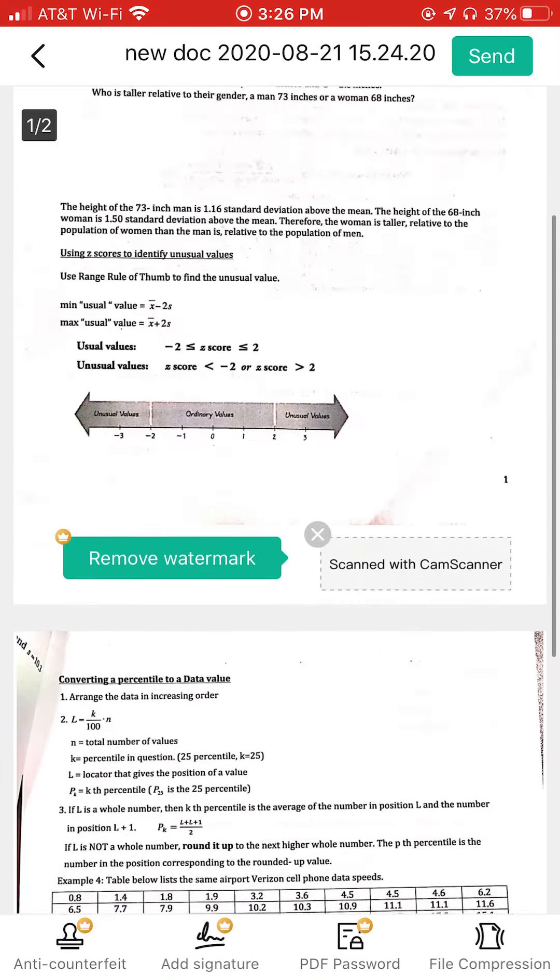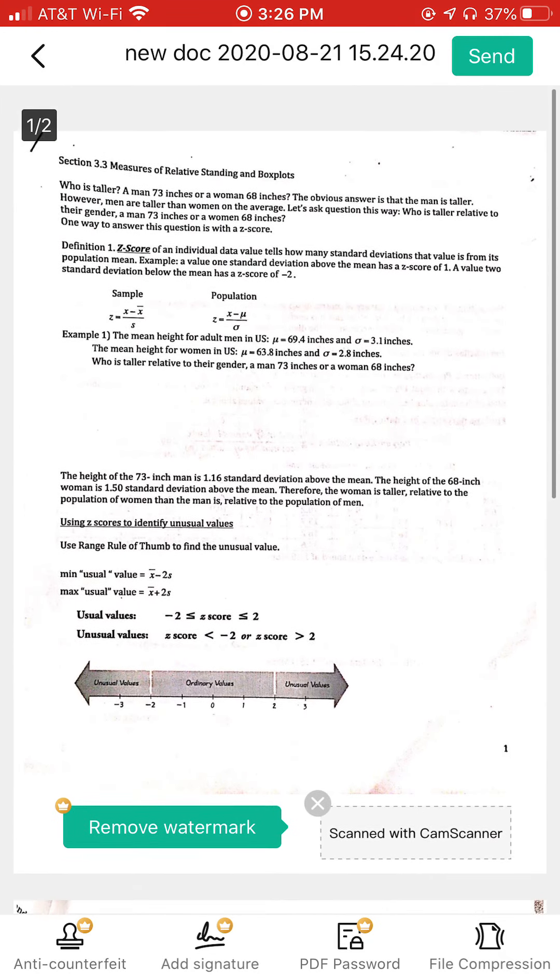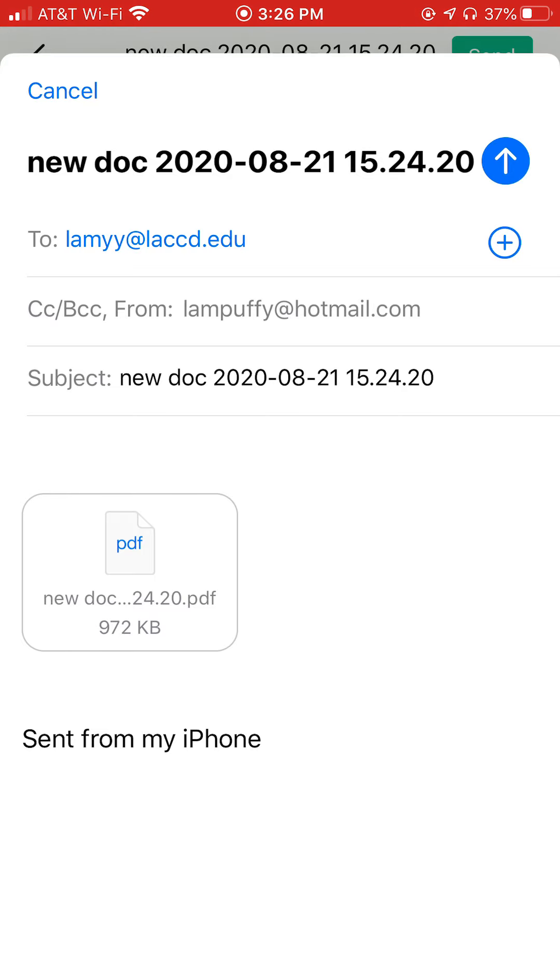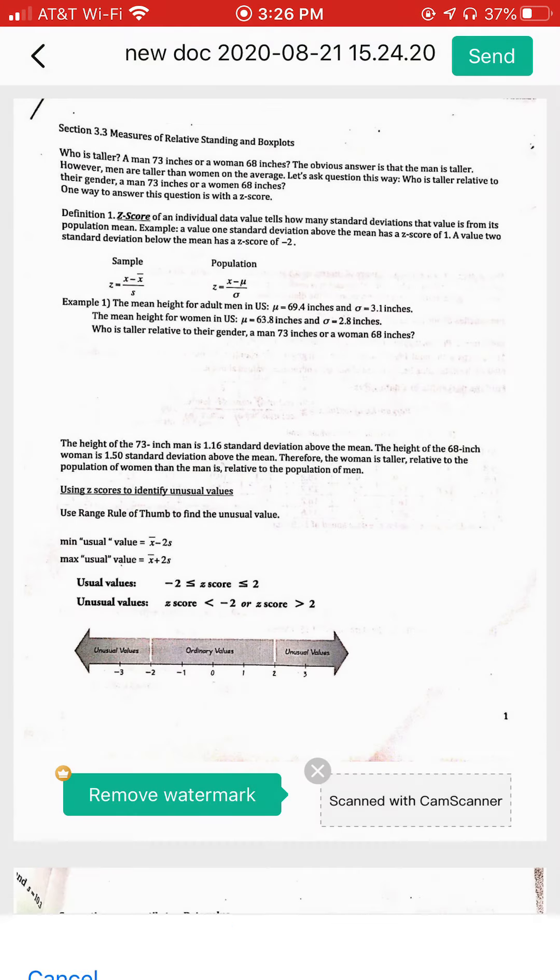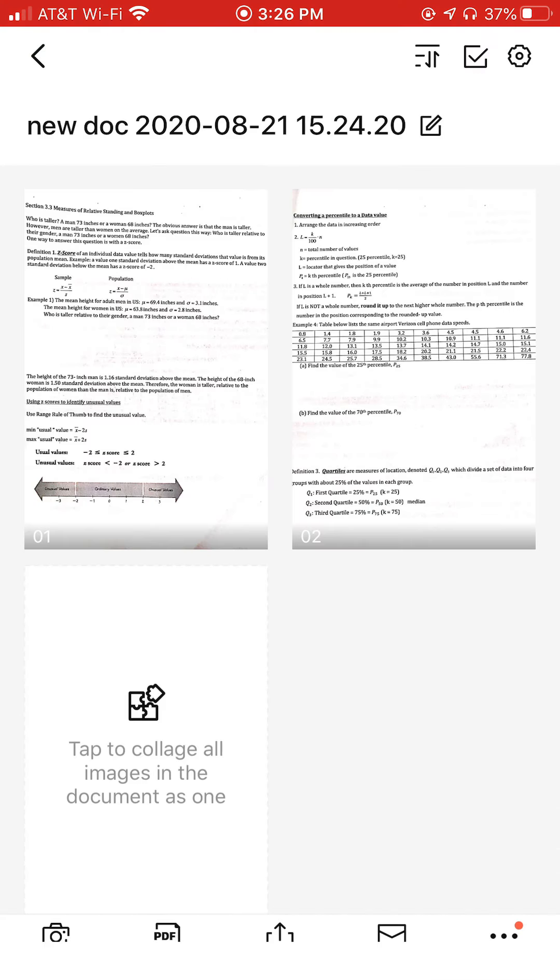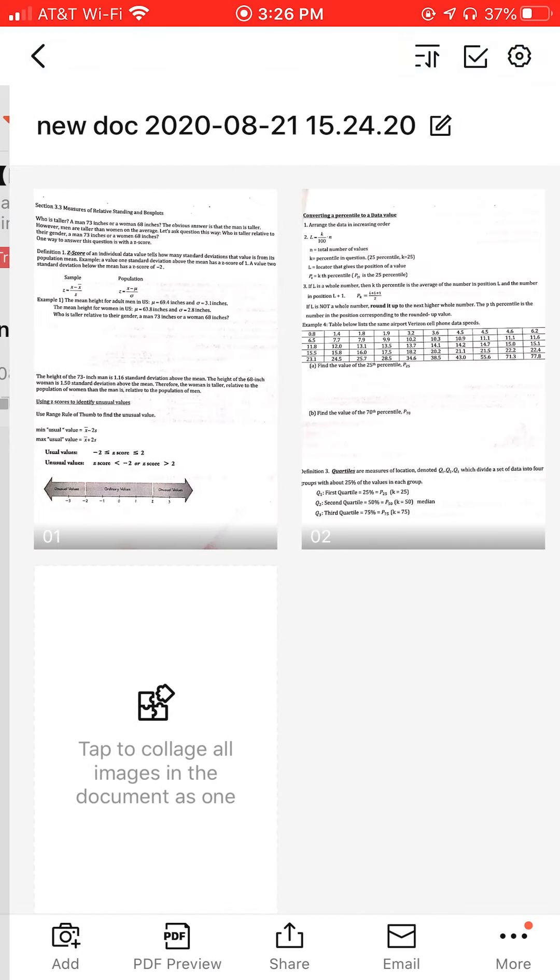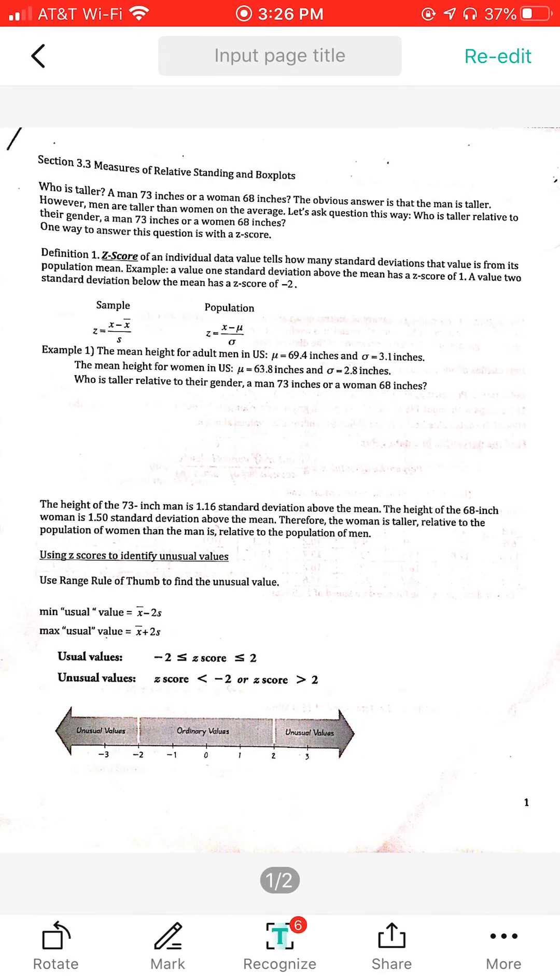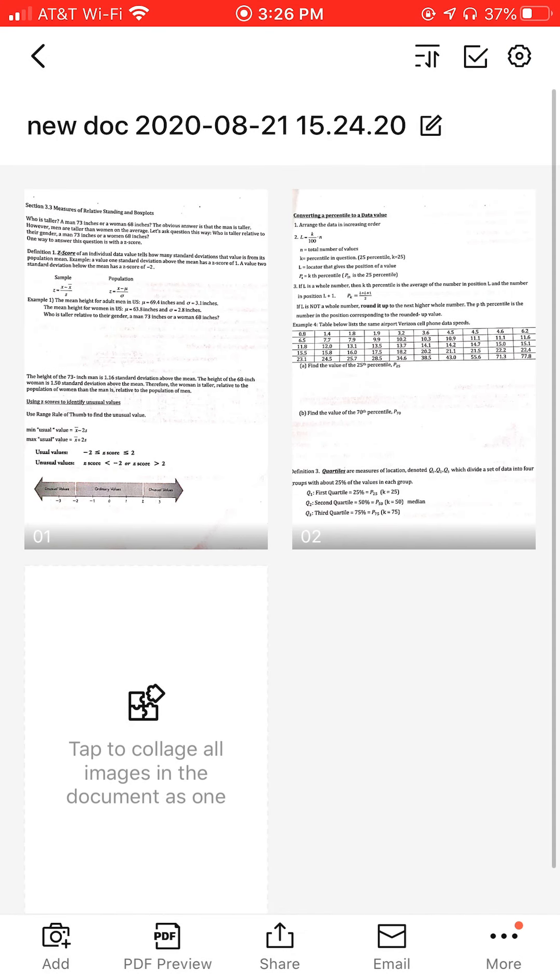So you can see I have two pages in one file. And then send. You can send it out. Go back here. One more time, double check you have one PDF file with two pages. Double check you have two pages in one PDF file.